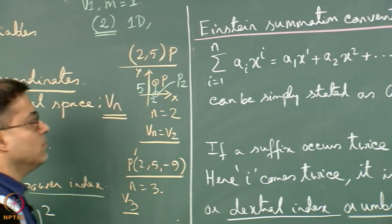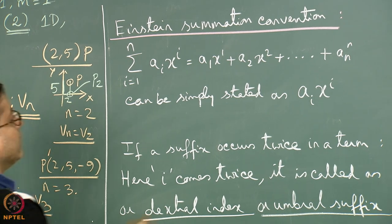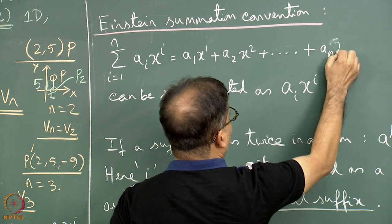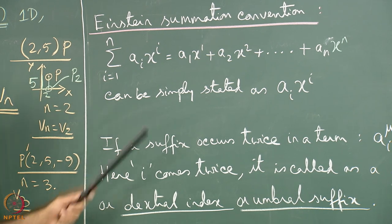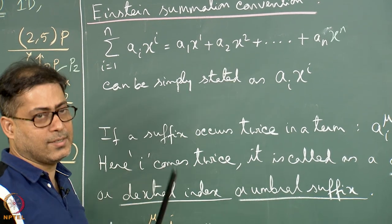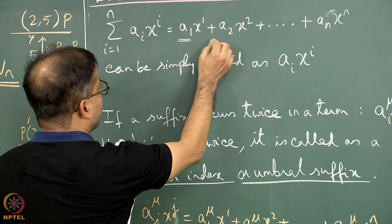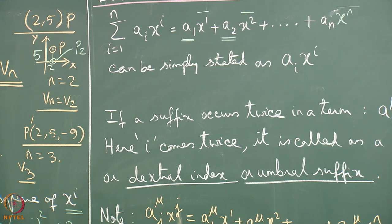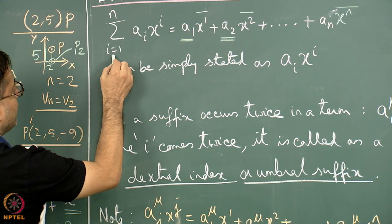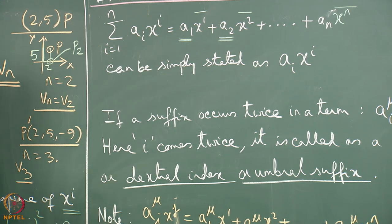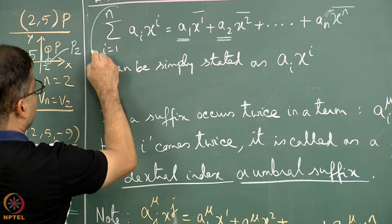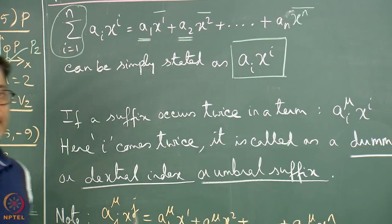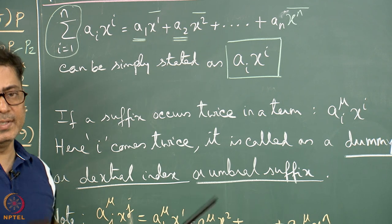Now we look at the Einstein summation convention. We can write an expression a1x1 + a2x2 + … + anxn, where these 1, 2 are not powers. This can be written as the summation from i=1 to n of aᵢxᵢ. The Einstein summation convention says: drop the summation symbol altogether and just write aᵢxᵢ. Henceforth, aᵢxᵢ automatically means this sum.